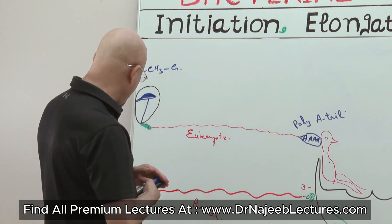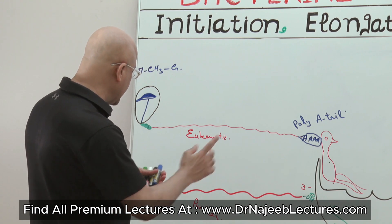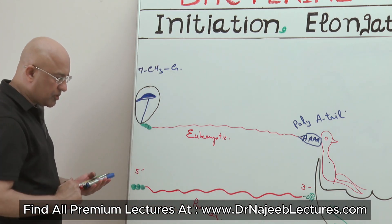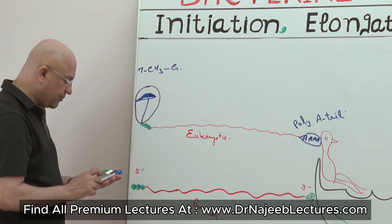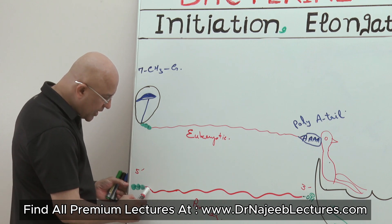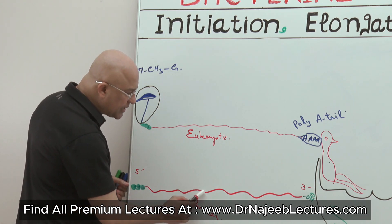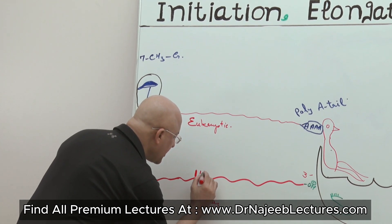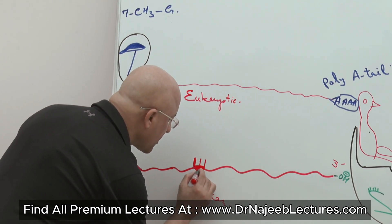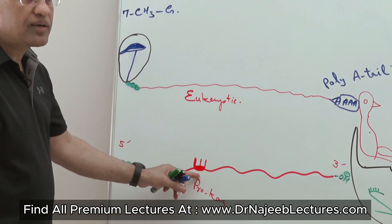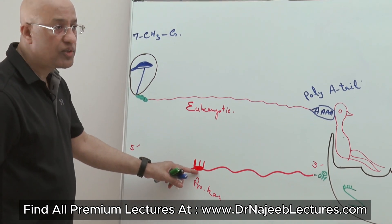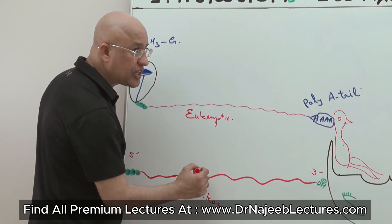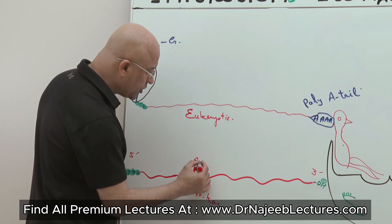There is one very interesting difference, but before I go for that difference, I will tell you what are the important regions in prokaryotic messenger RNA. This is the 5' end. If you read the 5' end and move downstream, you will find a start codon — a special codon which signals where the process of translation should start. This codon is called the start codon, and it is from here that the inauguration of peptide chain formation occurs. The start codon is AUG.